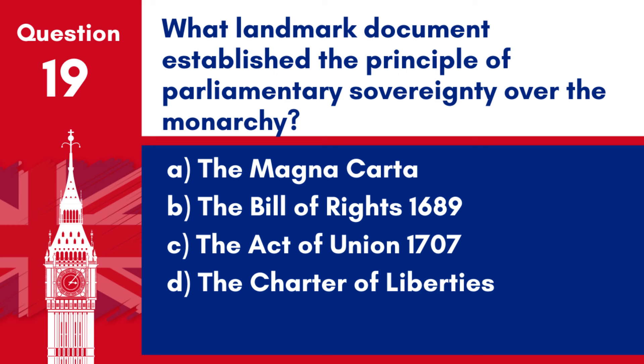Question 19. What landmark document established the principle of parliamentary sovereignty over the monarchy? a. The Magna Carta. b. The Bill of Rights 1689. c. The Act of Union 1707. d. The Charter of Liberties.